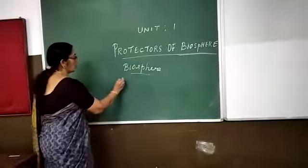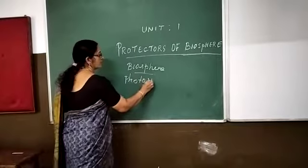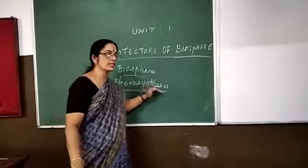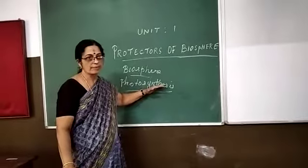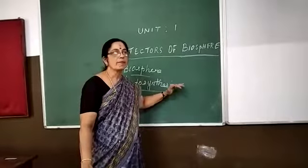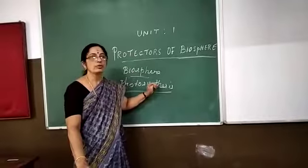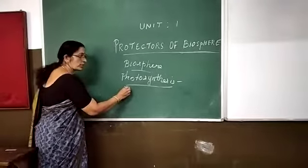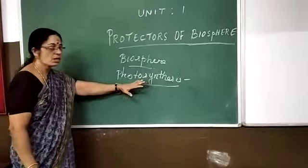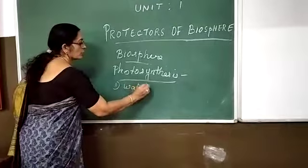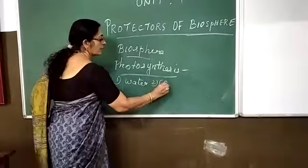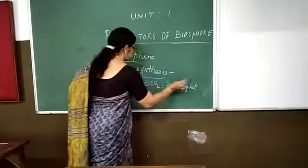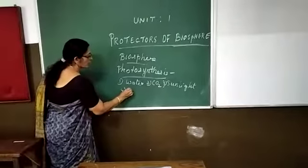Do you all know what is photosynthesis? Right from the lower classes we have been discussing photosynthesis. As you all know, photosynthesis is the process where plants prepare their food. The four factors essential for photosynthesis are: one, water; two, carbon dioxide; three, sunlight; and four, chlorophyll.